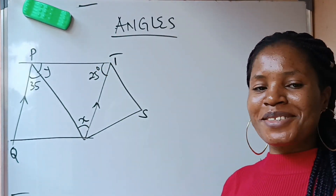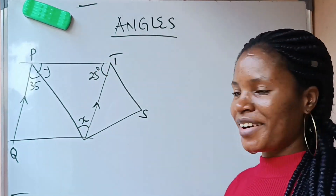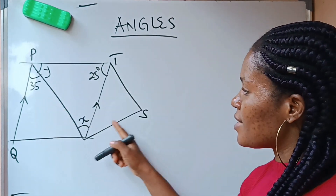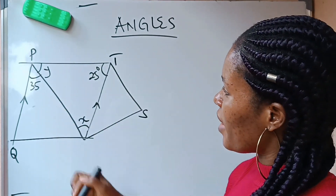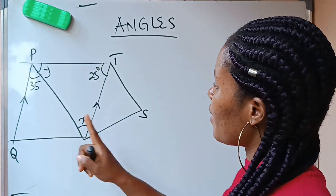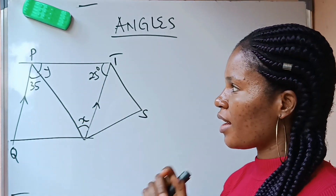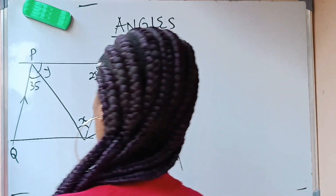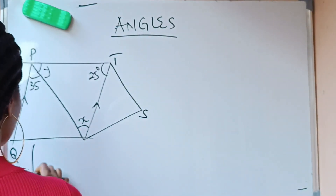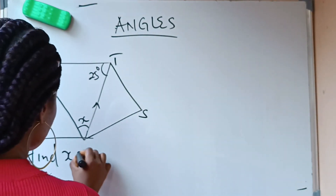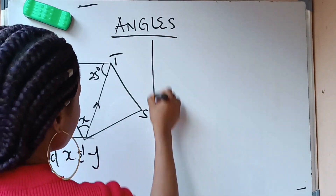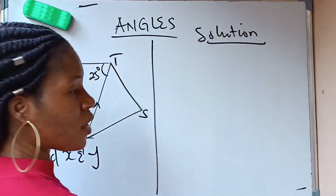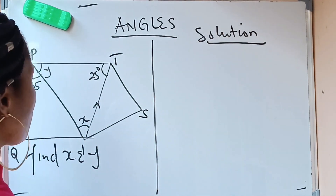Hello everybody, welcome to my channel. This is the question and we are asked to find the values of the lettered angles — that is, to find the value of y and the value of x. Now how do we get that? This is a very simple question.